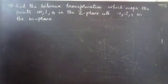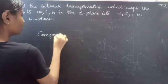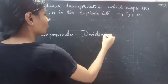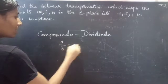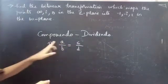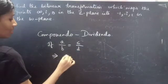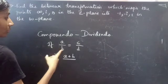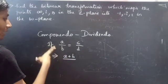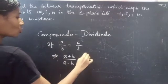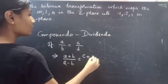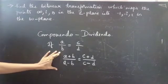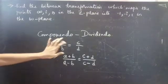Before going to the problem, let's see what is componendo dividendo. If you have a/b equals to c/d, then (a+b)/(a-b) equals to (c+d)/(c-d) — that is, numerator plus denominator over numerator minus denominator on both sides. We are going to apply this to solve the problem. This is called componendo dividendo.